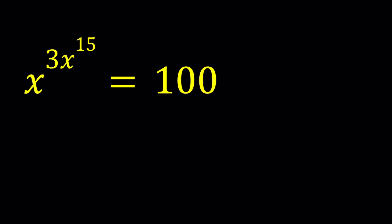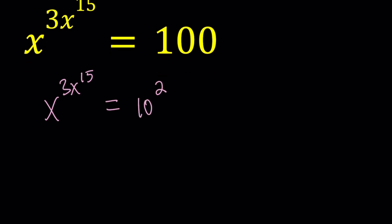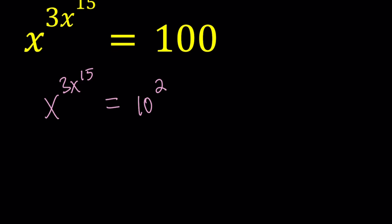We have x to the power 3x to the power 15 equals 100 and we're going to solve for the x values. So I want to first of all write the right hand side as 10 squared. And then I want you to notice one thing here and that also is going to help you understand the general form. 3 times 5 is 15 and 2 times 5 is 10. So 10 is the base. If I multiply the exponent by 5 I get 10. If I multiply 3 by 5 I get 15 which is the exponent of the exponent. Hopefully you get the idea.